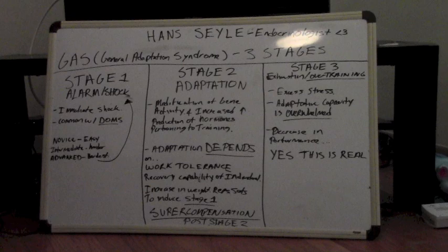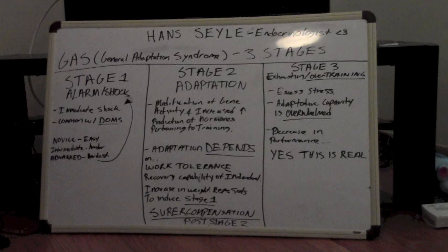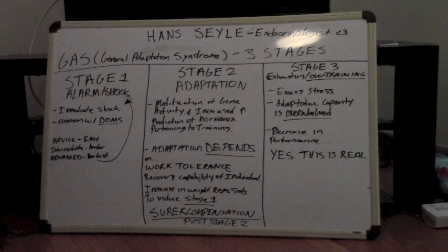Essentially what we're seeking to do is supercompensate — meaning that once we adapt to the given stress, we should be able to exceed the amount we were previously able to do. Supercompensation usually occurs after adaptation. So if you were pressing 50 pounds for 5 reps and now you can press 50 pounds for 6 reps, you've technically supercompensated according to Hans Selye's theory.